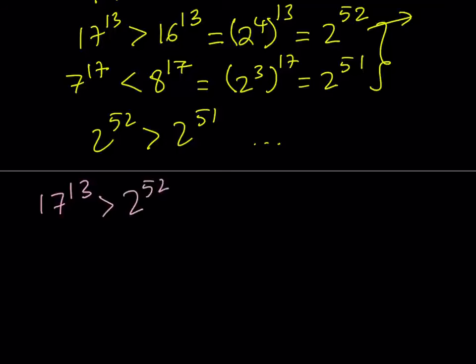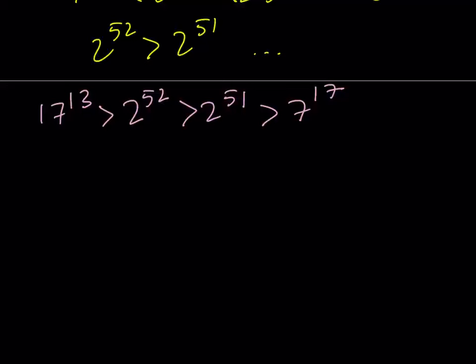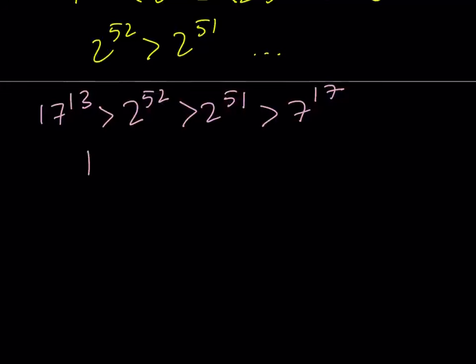But 2 to the power 52 is greater than 2 to the power 51, and 2 to the power 51 is greater than 7 to the power 17. So this chain of inequalities gives us 17 to the power 13 is greater than 7 to the power 17. This is our larger number.